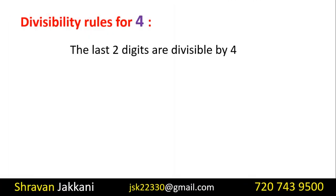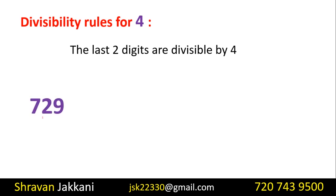Divisibility rule of 4: the last 2 digits are divisible by 4. If the last two digits of a number are divisible by 4, then the entire number is divisible by 4. For example, consider 729. The last two digits are 29. Since 29 is not divisible by 4, this number is not divisible by 4.